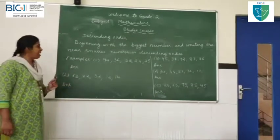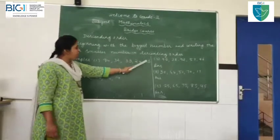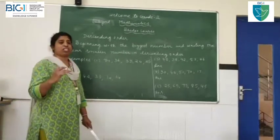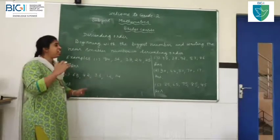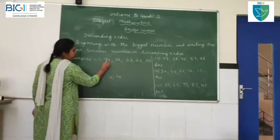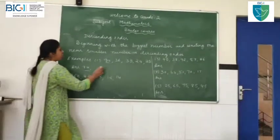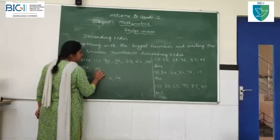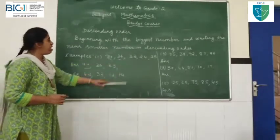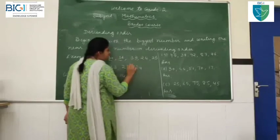Example: 94, 36, 33, 24, 25. Now, what is descending order? We have to start from the big number to the smallest number. Which is the biggest number? 94. We will start with 94. Next, which is the biggest remaining number? 36. Next, 33. Then 25. Next biggest number is 24. Did you understand, children?